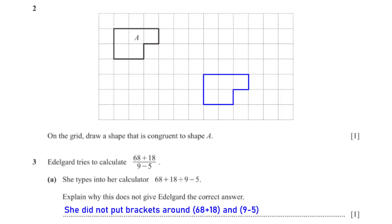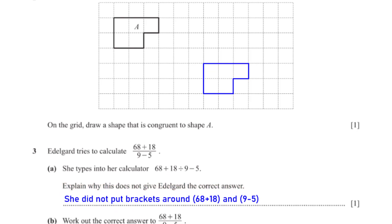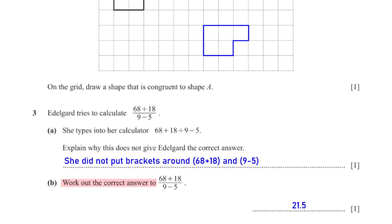Edelgard tries to calculate 68 plus 18 divided by 9 minus 5. She types into her calculator 68 plus 18 divided by 9 minus 5. Explain why this does not give the correct answer: she did not put brackets around (68 plus 18) and (9 minus 5). Without the brackets, the calculator carries out the division operation first, leading to a wrong answer. The correct answer to (68 + 18) ÷ (9 − 5) is 21.5.